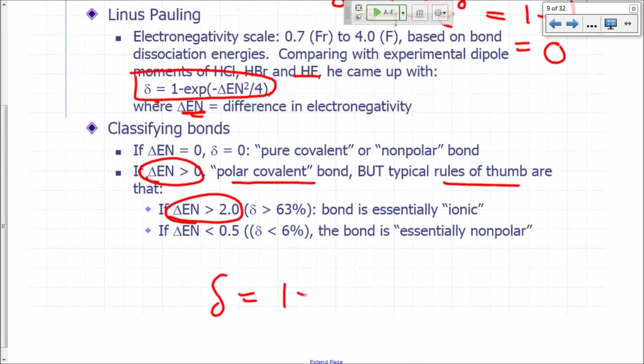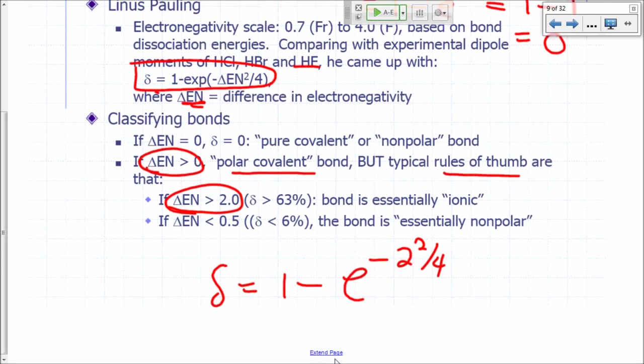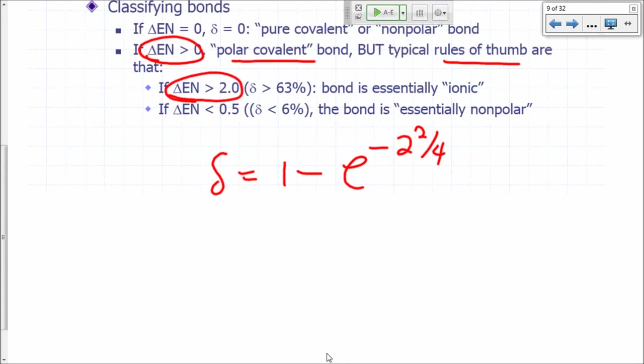Delta equals 1 minus e to the negative 2 squared over 4. If the difference is 2, so that's 1 minus e to the, what's 2 squared over 4?